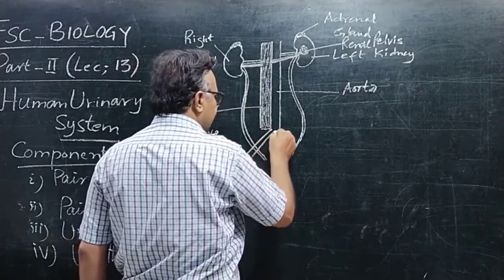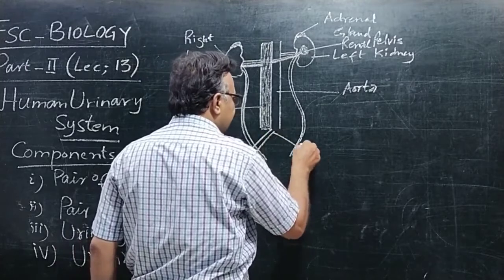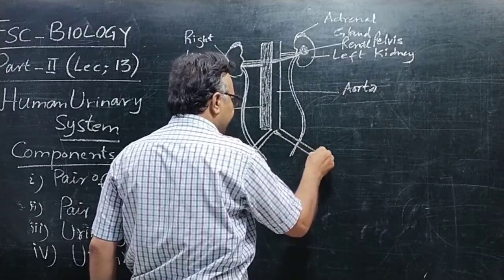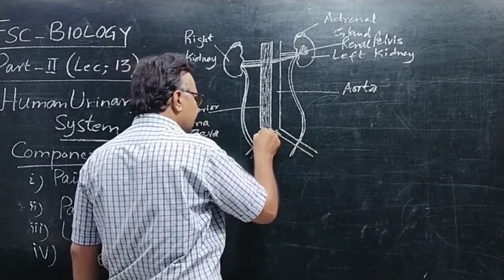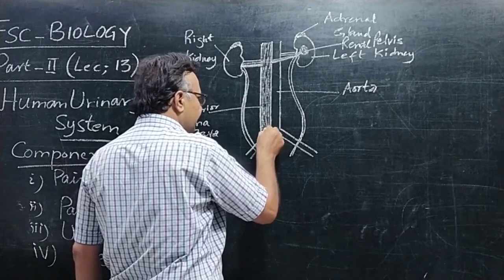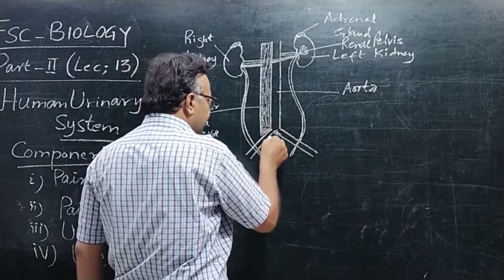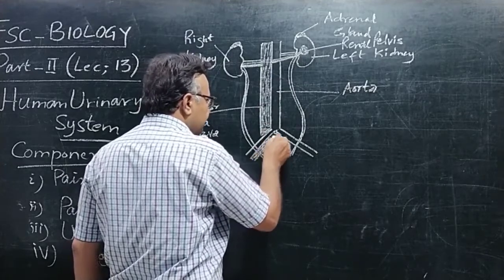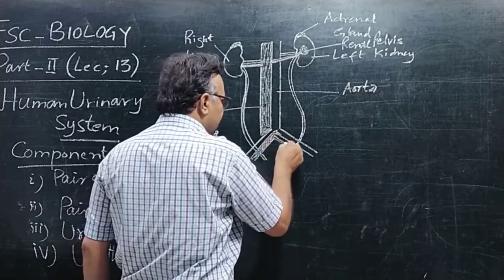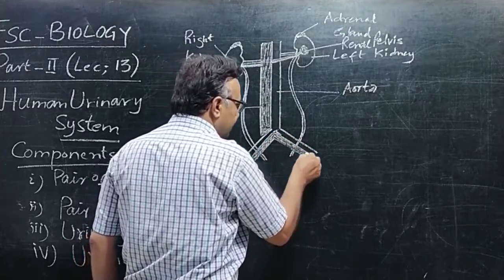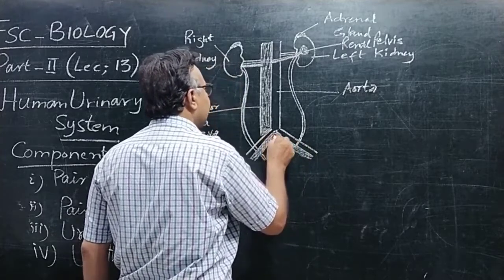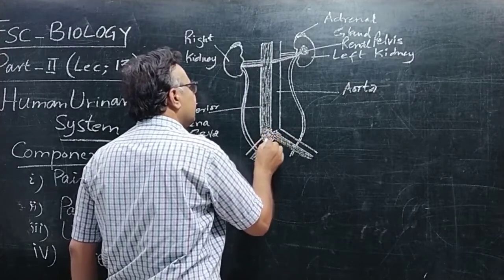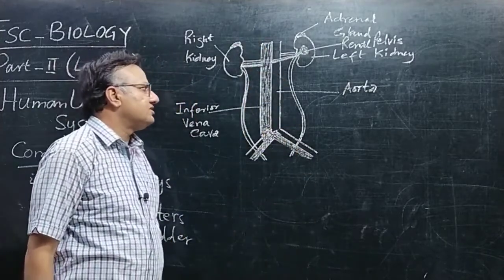یہ جو aorta ہے، جب یہ نیچے abdominal part کے پاس آتی ہے تو یہاں پہ آکے bifurcate ہو جاتی ہے۔ اسی طرح سے inferior vena cava دونوں limbs کی طرف سے iliac veins آپس میں ملتی ہیں اور مل کر inferior vena cava بنتی ہے۔